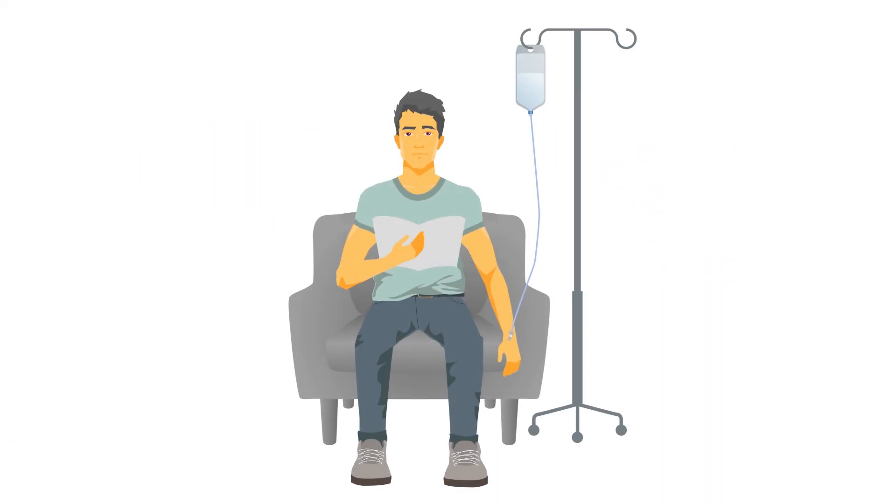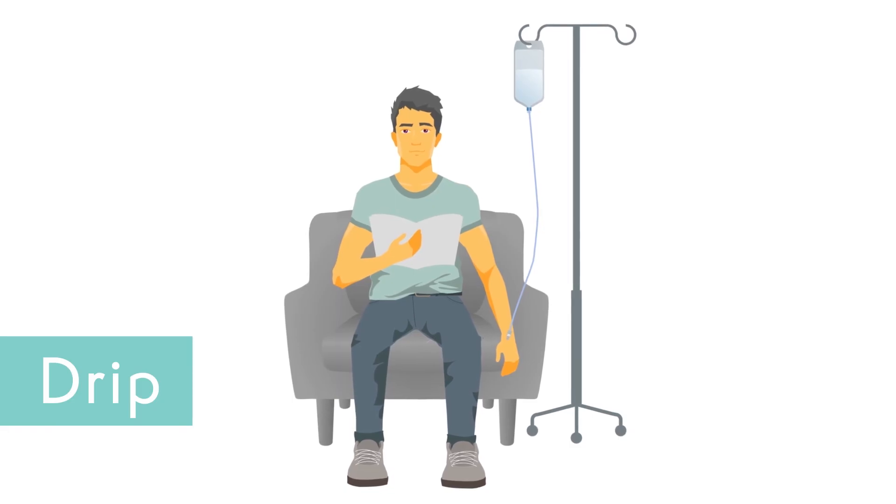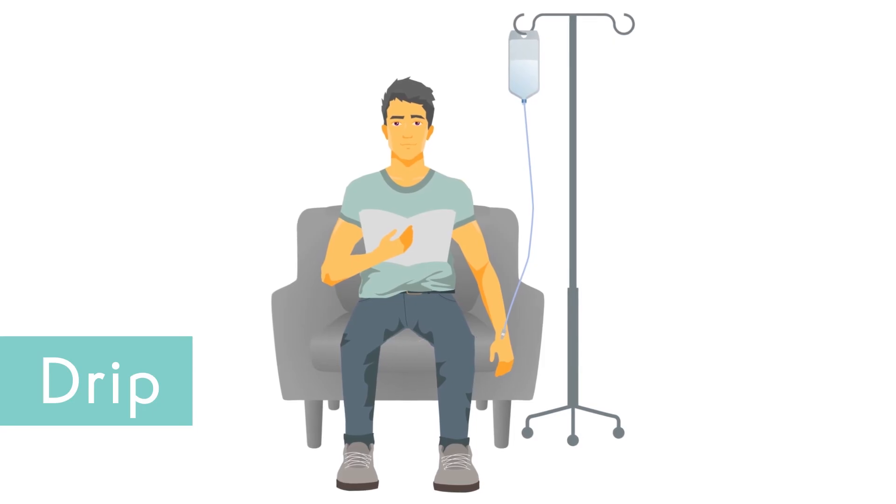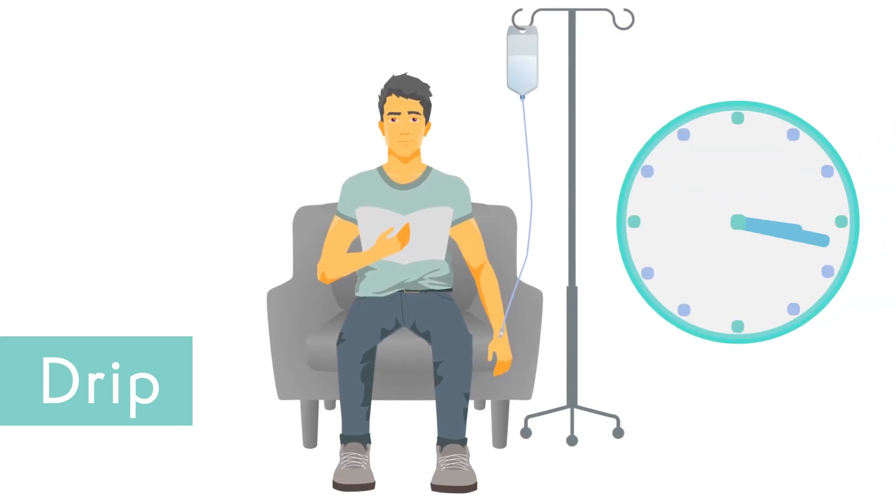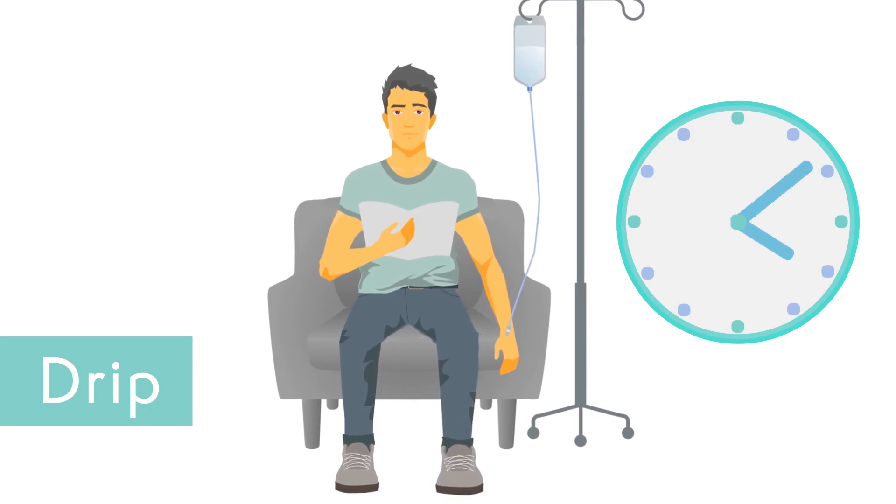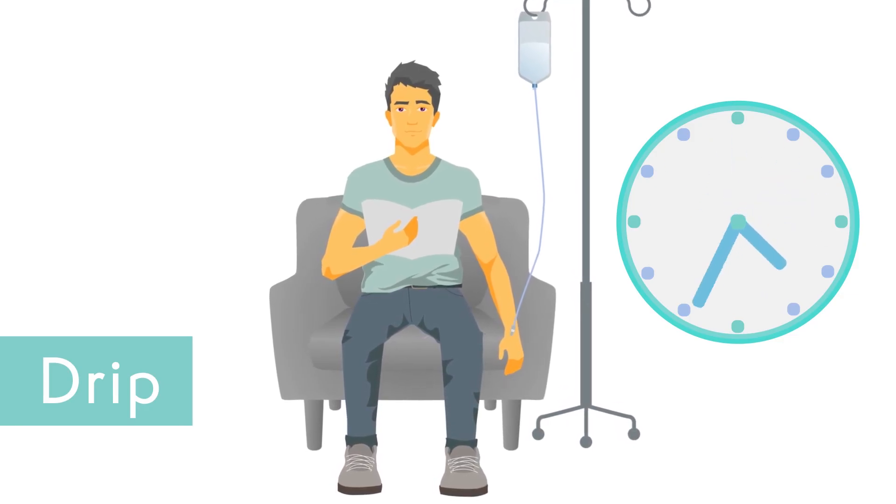Other IV drugs are given as an intravenous infusion, often called a drip. IV chemotherapy drugs are mixed with fluid in a bag. The fluid drips slowly from the bag, down some tubing and into a vein in your arm over a set amount of time. This could be anywhere from 30 minutes to a number of hours, depending on the drug you are given.